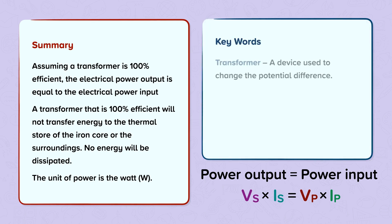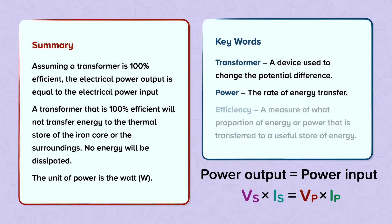Keywords. Transformer: a device used to change the potential difference. Power: the rate of energy transfer. Efficiency: a measure of what proportion of energy or power is transferred to a useful store of energy.